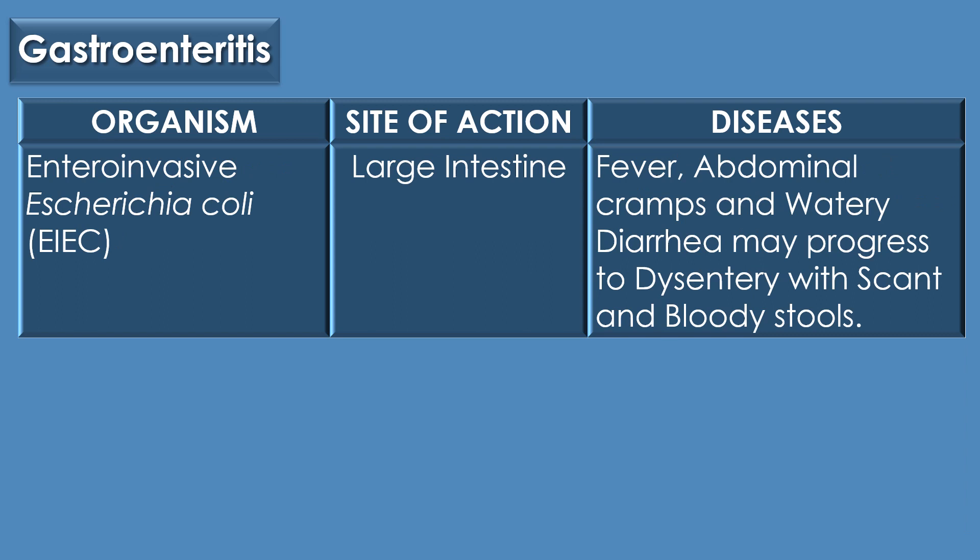Finally, the gastroenteritis caused by Enteroinvasive E. coli or EIEC mainly targets the large intestine and results in fever, abdominal cramps, and watery diarrhea, which progresses to dysentery with scant and bloody stools.